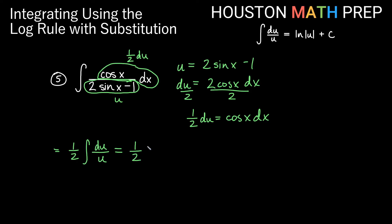So we get one half ln of the absolute value of u plus c. We'll go ahead and replace our u back in terms of x. We'll say one half ln of absolute value of 2 sin x minus 1, all of that plus our constant.